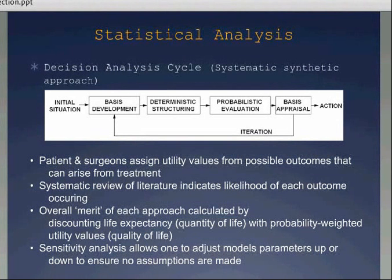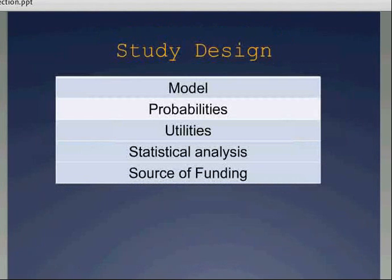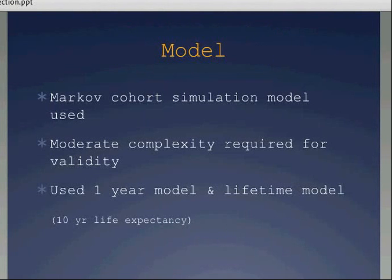They then did a sensitivity analysis, which allowed them to compare just how valuable the parameters were up or down, ensuring they weren't making unwarranted assumptions, especially over time. The study design was in five parts: the model, probabilities, utilities, statistical analysis, and funding sources. They used a Markov cohort simulation model of moderate complexity. They used this model over one year and extrapolated out to ten years.